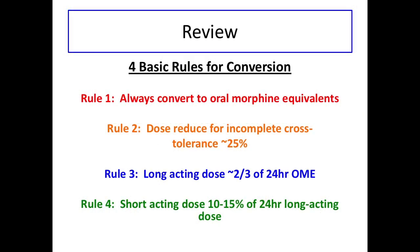In conclusion, opioid titration and conversion are important skills for the gynecologic oncologist. Remember these four rules: Rule one, convert all opioids to 24-hour oral morphine equivalents. Rule two, decrease the 24-hour total by 25% to account for incomplete cross-tolerance when rotating opioids. Rule three, two-thirds of your total 24-hour OME should be long-acting opioids. Rule four, 10–15% of your long-acting dose will be your short-acting dose given every three hours on an as-needed basis. By applying these rules in combination with your clinical judgment, you will be able to titrate, convert, and rotate opioids for your patients.